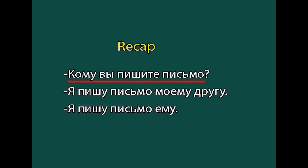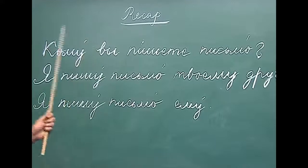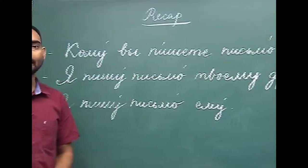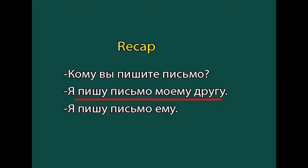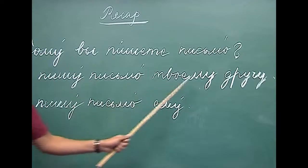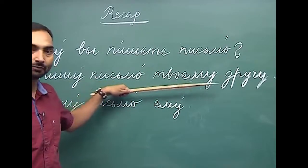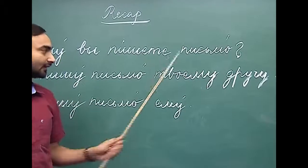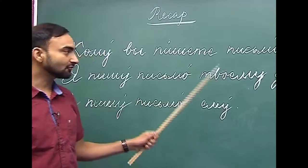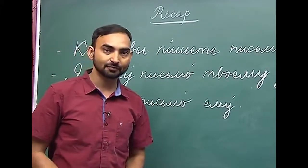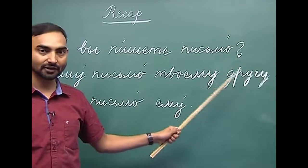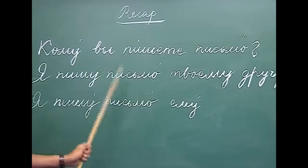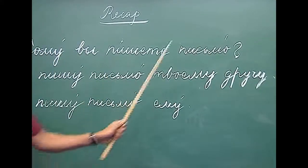If the question is komu, we are supposed to use nouns or pronouns in the dative case. For example, ya pishu pismo tvoimu droogu — I am writing a letter to your friend. Here, tvoi has become tvoimu, which is a possessive pronoun answering the question chimu. And droog, a masculine noun, becomes droogu in the dative case.